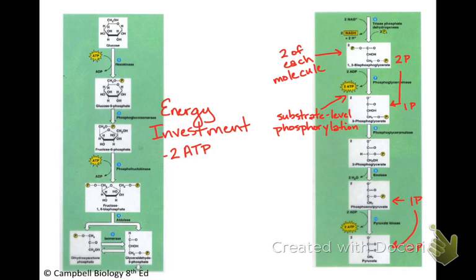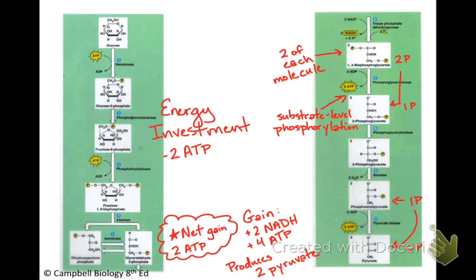We also produce NADH right at the beginning there as we break down, or as we convert G3P to another molecule. So we end up gaining 2 NADHs and 2 and 4 ATP with a net gain of 2 ATP, and we've produced 2 pyruvate molecules now. So those pyruvates are ready to enter the mitochondria and proceed into the citric acid cycle.